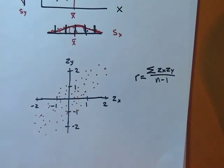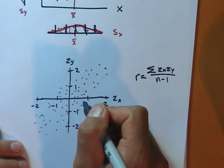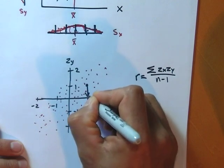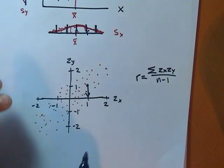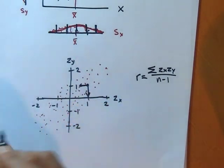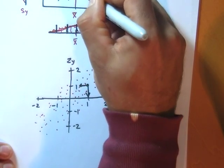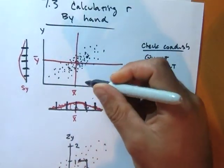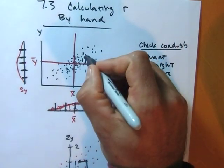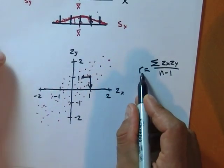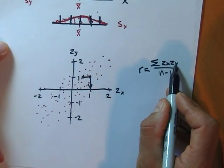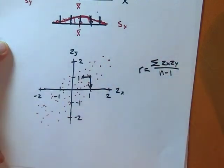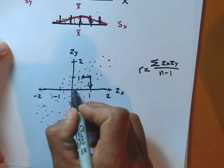Let me explain with a specific point. Say a point has a zx of one — one standard deviation above the mean in the x direction — and zy of one — one standard deviation above the mean in the y direction. Its contribution to the r calculation is zx times zy, which is one times one equals one. Notice that one is just the area of a one-by-one rectangle.